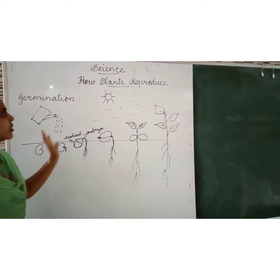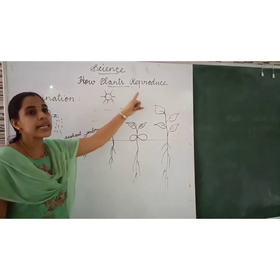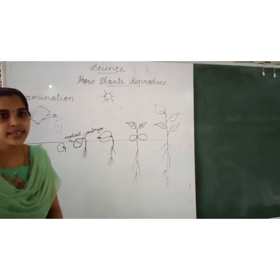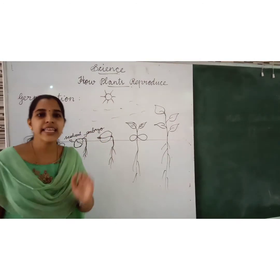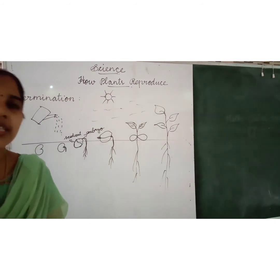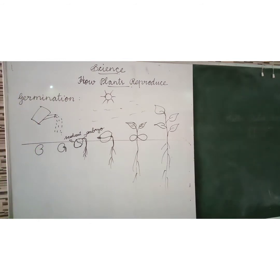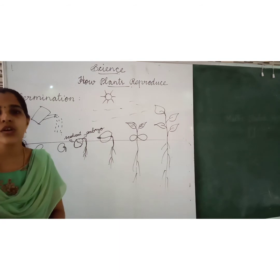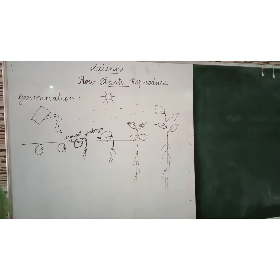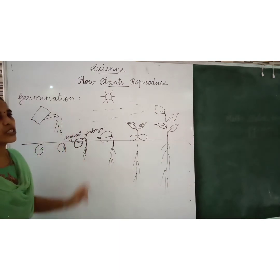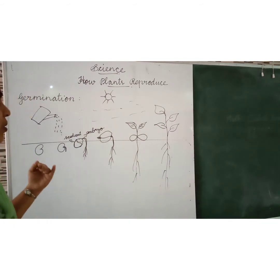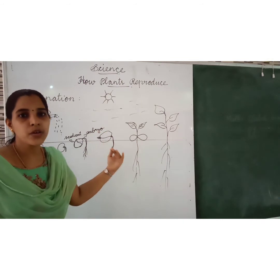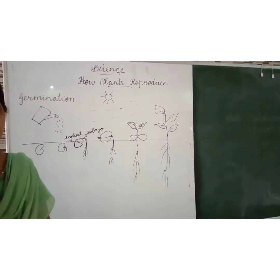Now we are studying about reproduction of plants. All living things reproduce their own kind. Plants also reproduce small plants. First is germination. Before reproduction we need germination. Some plants reproduce through their seeds — most plants produce new plants through their seeds.